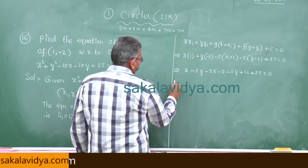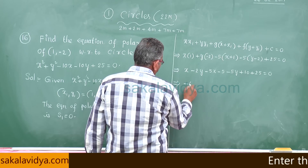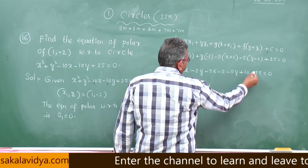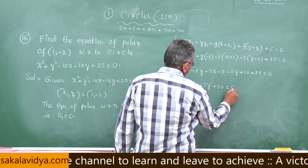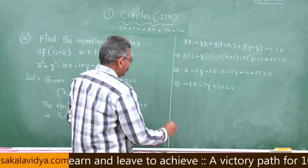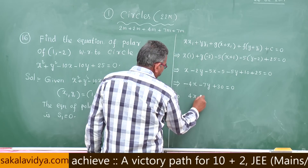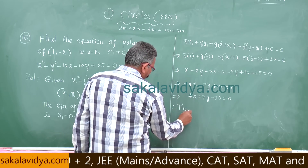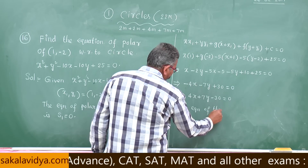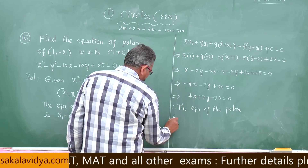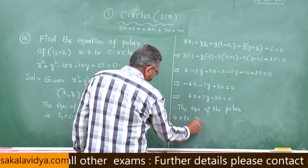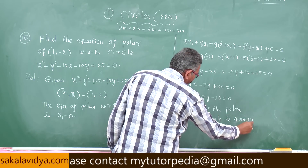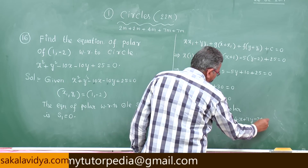Simplifying: (-5x + x) + (-2y - 5y) + (-5 + 10 + 25) = 0, giving -4x - 7y + 30 = 0. Multiplying both sides by -1, we get 4x + 7y - 30 = 0. Therefore, the equation of the polar with respect to the given circle is 4x + 7y - 30 = 0.